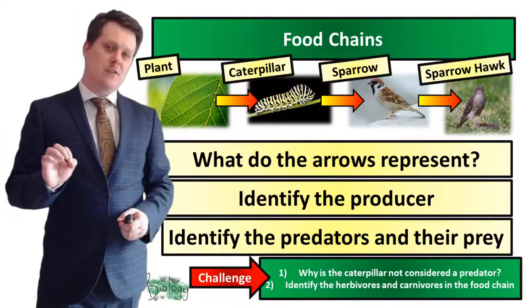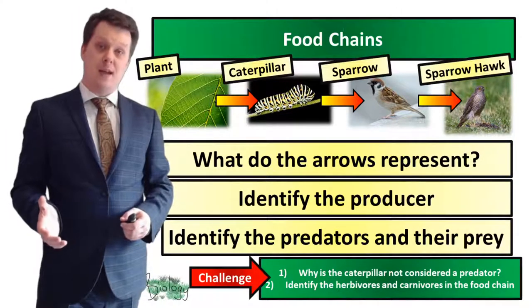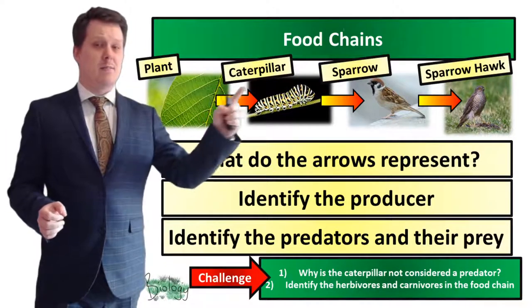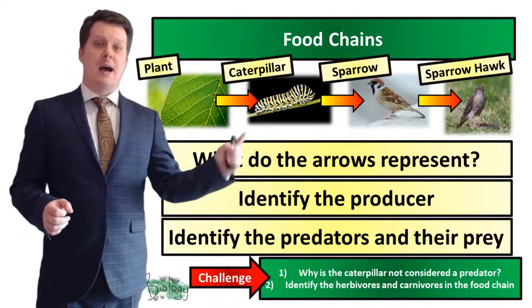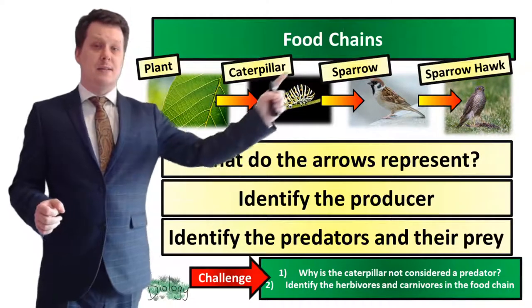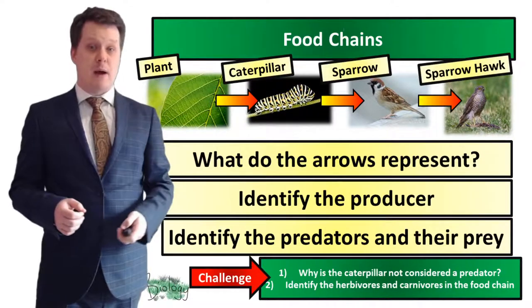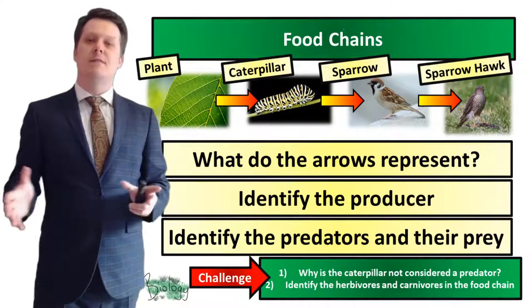Now we have constructed a food chain. Our plant is eaten by our caterpillar, our caterpillar is eaten by our sparrow, and our sparrow is eaten by our sparrowhawk.